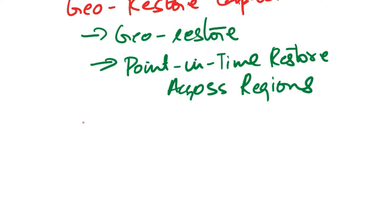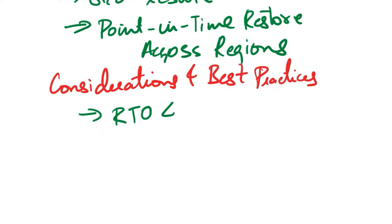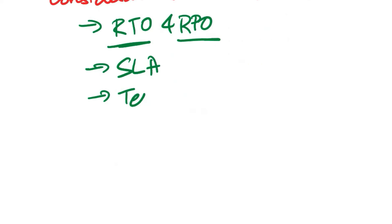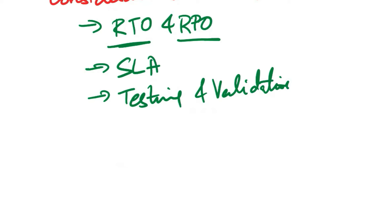For considerations and best practices: define your RTO (Recovery Time Objective) and RPO (Recovery Point Objective) to determine the frequency of backups and acceptable downtime during a restore operation. Understand the SLA for automated backups provided by Azure SQL Database and factor this into your overall backup strategy. Regularly test backup and restore processes to ensure they meet your recovery objectives, and validate geo-restore capabilities to ensure readiness for disaster recovery scenarios.